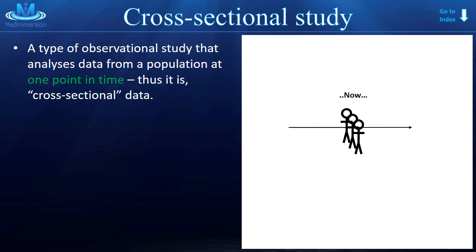Lastly is the cross-sectional study. This is a study that analyzes data from a population at one point in time. We're not looking forward in time. We're not looking backward in time. We're looking right now. What's happening right now? Thus, it's across the current section of time, or it's cross-sectional data.